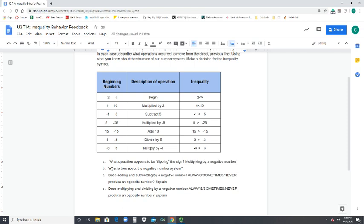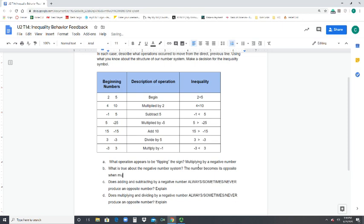So then that lets me think about what rules do I know about multiplying and dividing with integers when I'm dealing with a negative sign? What is always true about the negative number system? The value turns, the number becomes its opposite. The number becomes its opposite when multiplying by a negative.